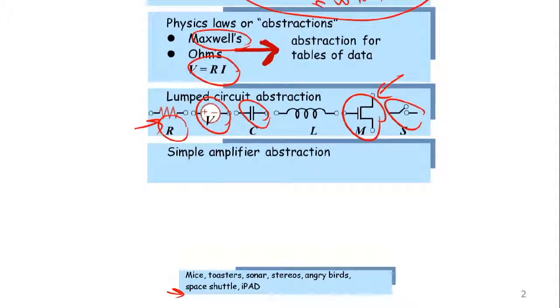So what we do is, again, apply the process of abstraction. We abstract out the behavior of collections of these elements, and the next abstraction that we will make in this course is the simple amplifier abstraction.